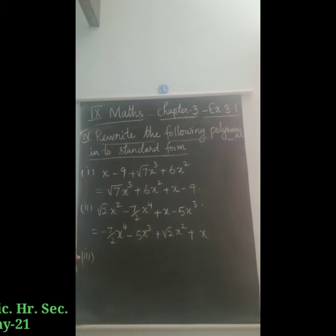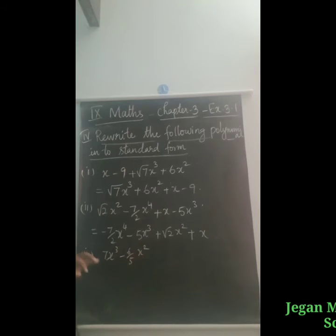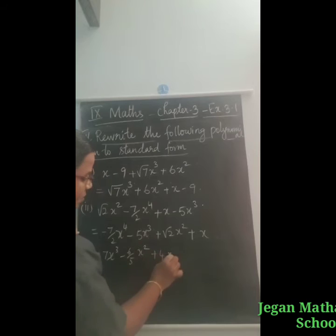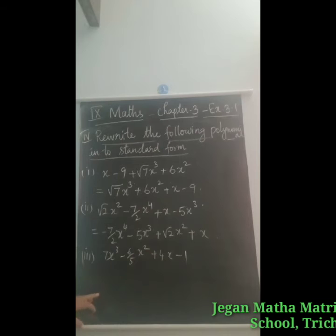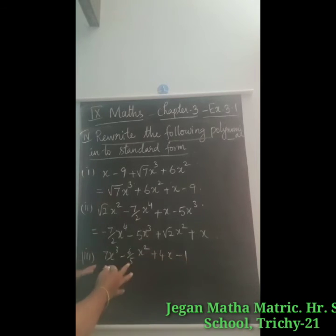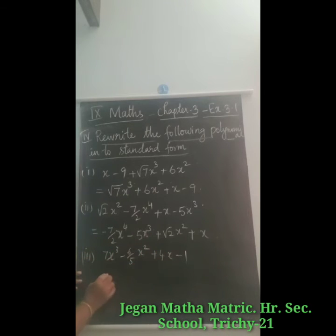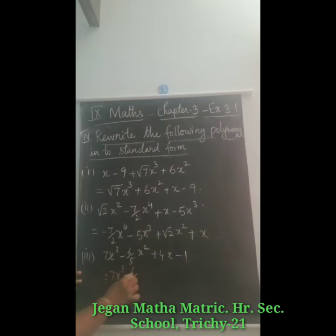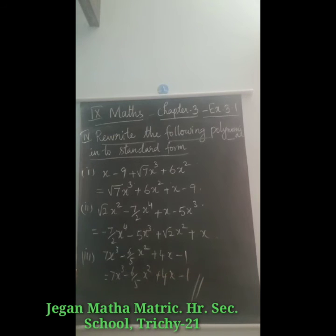Third one: 7x cubed minus 6 by 5 x squared plus 4x minus 1. The powers are already in descending order: 3, 2, 1, and a constant term. So the answer remains the same: 7x cubed minus 6 by 5 x squared plus 4x minus 1.